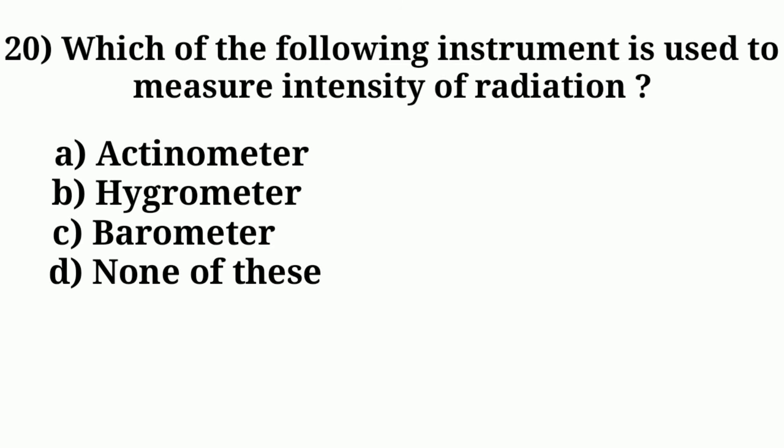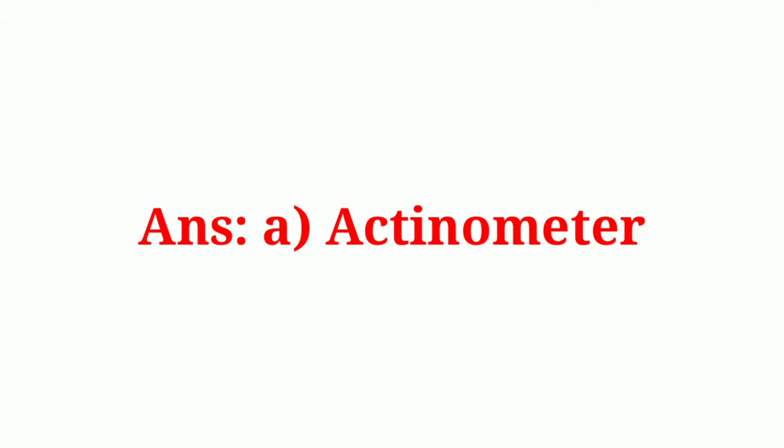Question number twenty: Which of the following instrument is used to measure intensity of radiation? Answer: option A, actinometer.